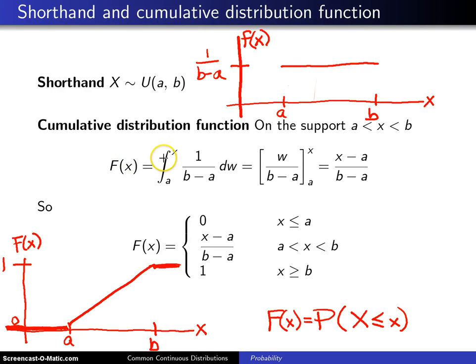Capital F of x is equal to the integral from the bottom of the support, which is a up to x of the probability density function. And the probability density function is 1 over b minus a on the support. And we're only looking at the support values right now. This integrand is a constant with respect to w. So it integrates to w divided by b minus a, evaluated from a up to x.